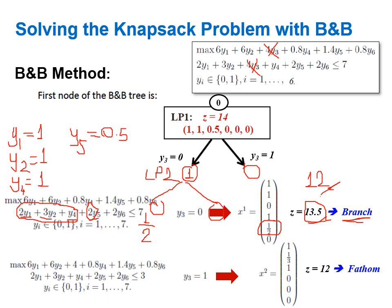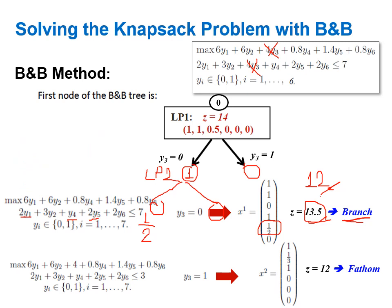I now solve this sub-problem with a knapsack capacity of three. Using the same greedy algorithm, I set y1=1 (weight two, satisfies capacity three). The next highest ratio is y2; I try to set y2=1, but two plus three equals five, which is not less than or equal to three. So I cannot set y2=1.